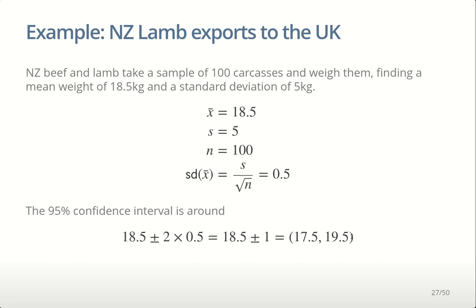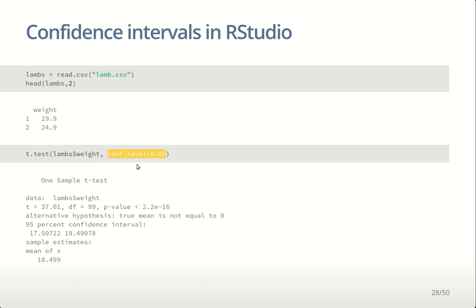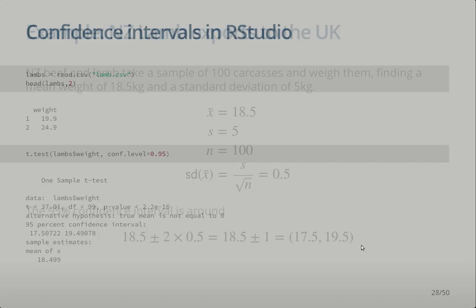In RStudio, we read in our data — here's our data, called 'lambs', with a single column 'weight' and 100 values. To compute a confidence interval, we use the command t.test, taking the lambs data and pulling out the weight column with the dollar sign, and specifying our confidence level 0.95. 0.95 is the default, so if you don't specify it, it defaults to that anyway. The output gives us the sample estimate — the mean of 18.5 — and a 95% confidence interval of 17.5 to 19.5, exactly the same as what we got by hand. In general we won't be computing these by hand; we'll just use the computer.